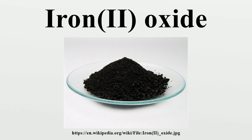Iron oxide adopts the cubic rock-salt structure, where iron atoms are octahedrally coordinated by oxygen atoms and the oxygen atoms octahedrally coordinated by iron atoms. The non-stoichiometry occurs because of the ease of oxidation of Fe²⁺ to Fe³⁺, effectively replacing a small portion of Fe²⁺ with two-thirds the number of Fe³⁺, which take up tetrahedral positions in the close-packed oxide lattice.